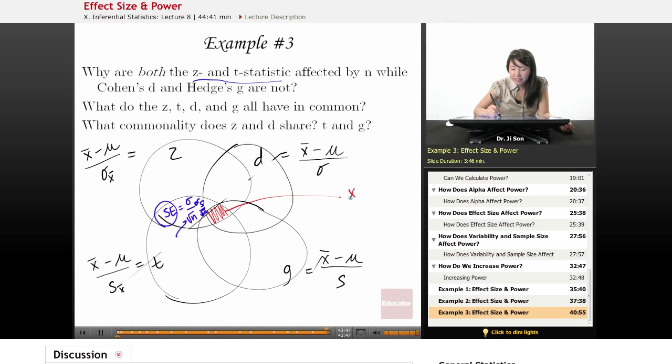Well, they all have this thing in common, right? So they're all about the distance, distance between sample and population, right? So it's all about that distance. Some of them are in terms of standard error, and some of them are in terms of population standard deviation.